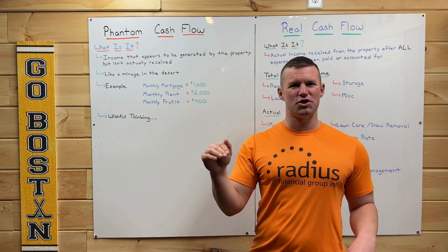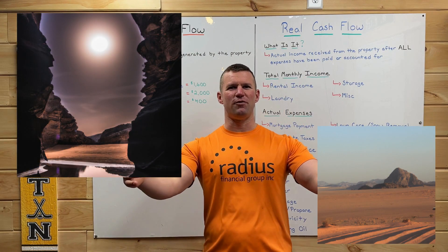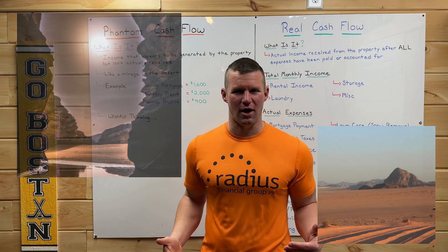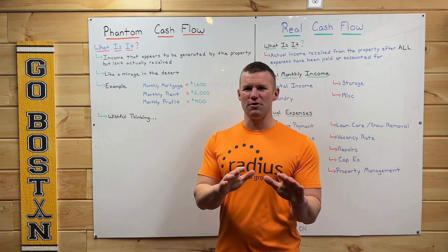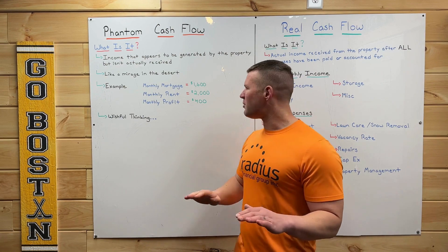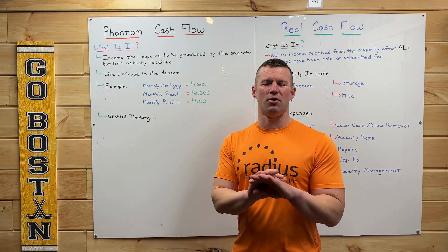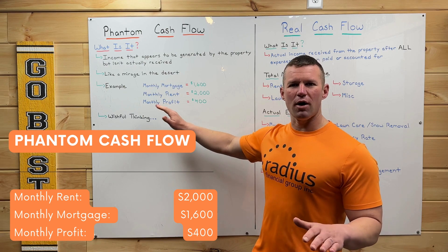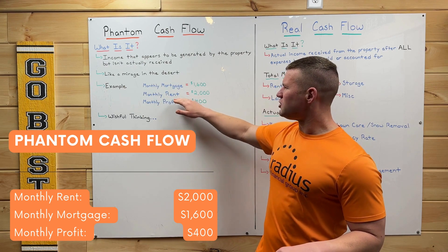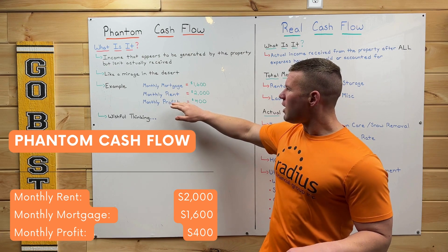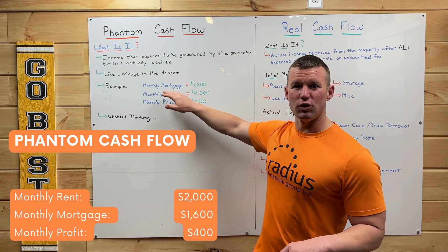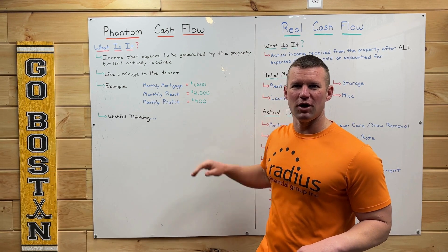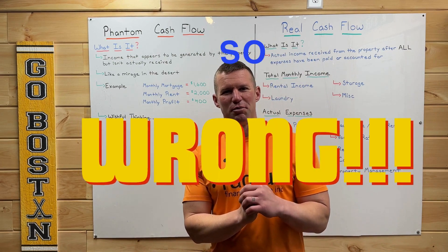Phantom cash flow is kind of like a mirage in the desert. You're looking at this beautiful mirage and once you get closer, it's not there. The example I hear all the time — and it's so inaccurate — is something like: 'I bought a property and I make $2,000 in monthly rent. My monthly mortgage is only $1,600 per month, so I'm profiting $400 per month.' That is so wrong.